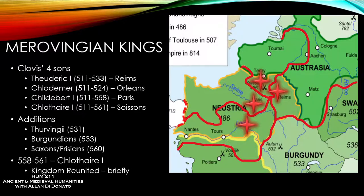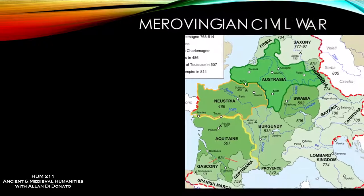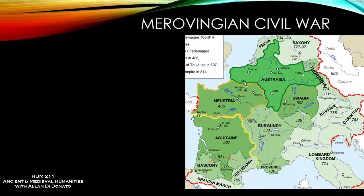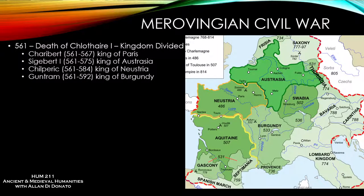By 558 — really from 558 to 561 — Chlothar I, the last surviving son of Clovis, ended up reunifying the kingdom, because the territory passed back to the surviving brother. Again, a lot of this was done through warfare, but it was a temporary reunion. After Chlothar passed away in 561, the same practice of partible inheritance meant he divided it up among his children.